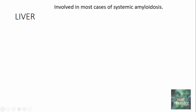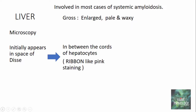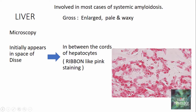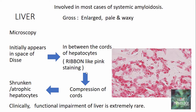Moving on to hepatic involvement in amyloidosis — the liver is involved in most cases of systemic amyloidosis. Grossly the liver is enlarged, pale, and waxy. On microscopic examination, amyloid initially deposits in the space of Disse, later appearing between the cords of hepatocytes as ribbon-like pink staining. With continued deposition, compression of hepatic cords leads to shrunken or atrophic hepatocytes. Importantly, even with extensive amyloid deposits, clinical functional impairment of the liver is extremely rare.